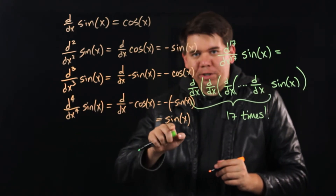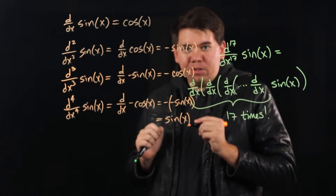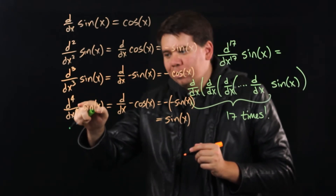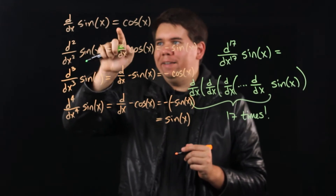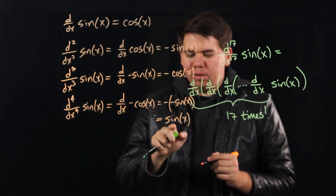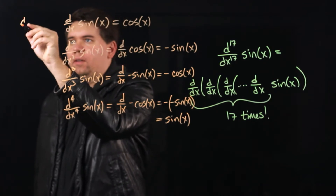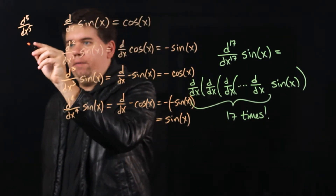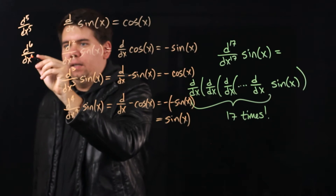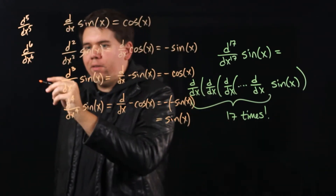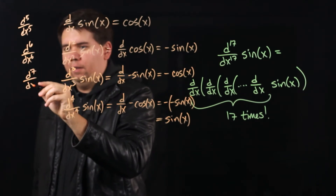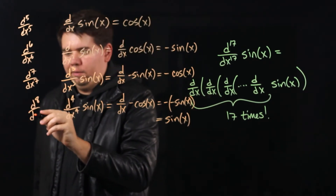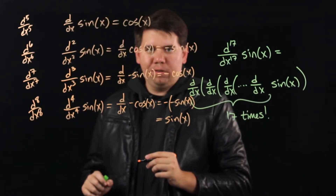Notice now we're back to where we started. So if I wanted the fifth derivative of sine of x, it's just the derivative of the fourth derivative, but the fourth derivative is sine of x again — so I'm back to the beginning. The fifth derivative is the same as the first derivative, the sixth is the same as the second, the seventh is the same as the third, and the eighth is the same as the fourth, and so on.